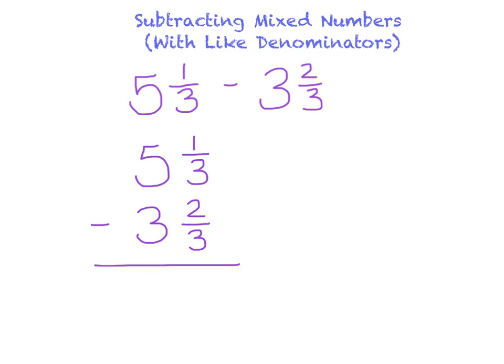Hmm. We've run into a bit of a problem. We can't subtract 2/3 from 1/3. We are going to have to change 5 and 1/3 into a mixed number that allows us to do this subtraction problem. This is called renaming our number.